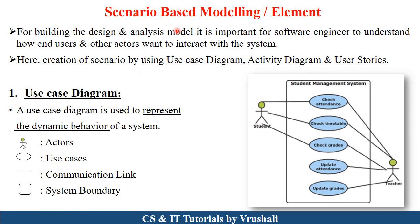The first one is scenario-based modeling. Every project and every product has different types of features and functionalities. Due to scenario-based modeling, the software engineer understands which type of user uses which type of functionality or feature, and how the end user interacts with the particular system. That's why scenario-based modeling is used. There are three types of diagrams in scenario-based modeling: use case diagram, activity diagram, and user stories.